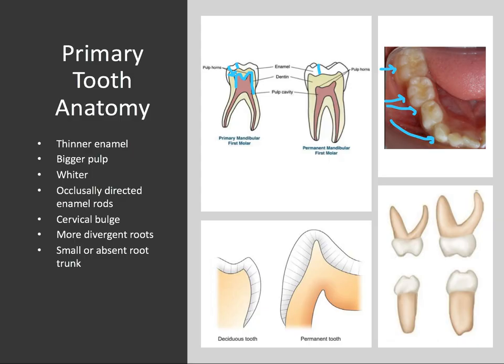If we look at the cross sections, we can appreciate the difference in direction of the enamel rods. For a permanent tooth, the rods tend to be perpendicular to the dentin at the DEJ, and near the cervical third, those enamel rods start to dip down in a gingival direction. Whereas in primary teeth, the enamel rods point up occlusally — and that's important when thinking about the differences in tooth anatomy between these two.